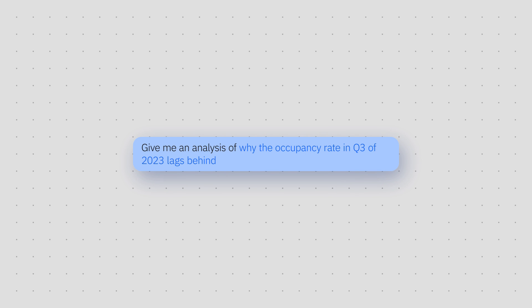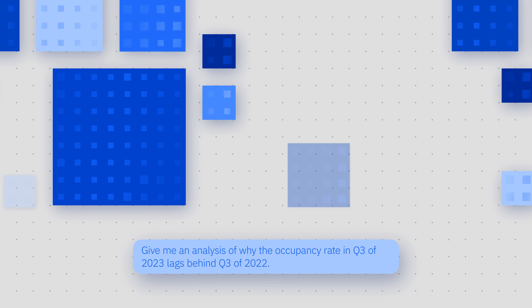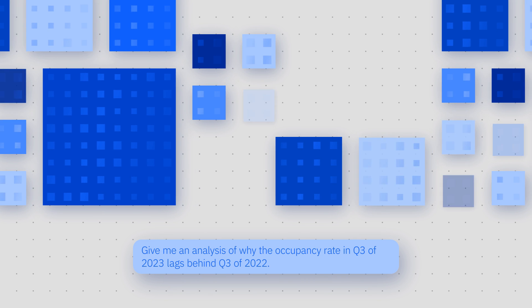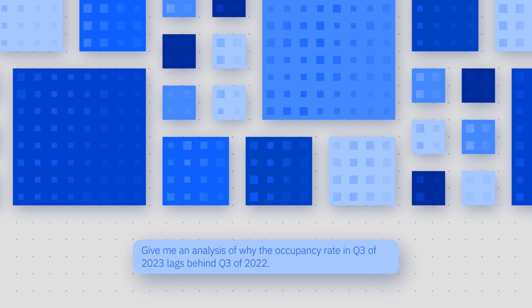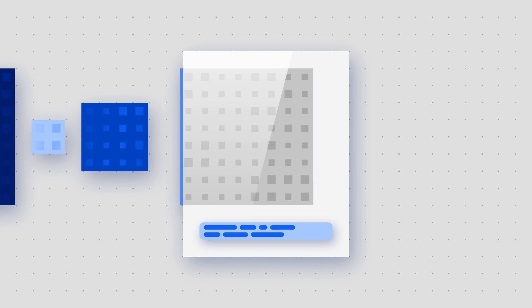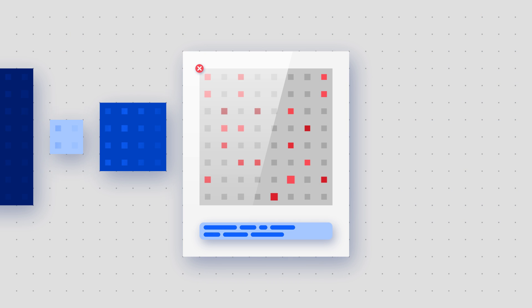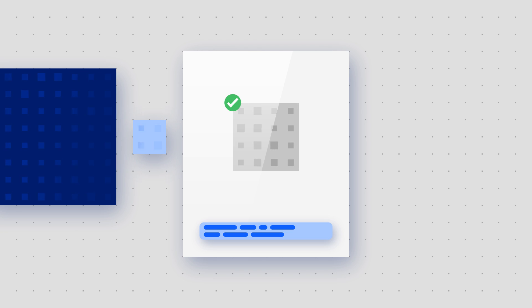That prompt should capture the use case, the problem, the ask of the technology, and the guardrails for what good looks like. Next, you research the available models, looking at things like model size, performance, costs, risks, and deployment methods. You can then use the information you've collected to evaluate those models against your prompt and identify which of them you first want to test.